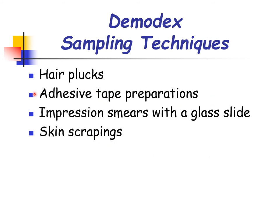Adhesive tape preparations involve pressing tape strips against lesions and transferring the tape to a microscope slide — a useful non-invasive technique in difficult-to-sample areas and where secondary infection has produced exudate. Impression smears with a glass slide are often successful where there are exudative lesions. For skin scrapings, the skin is squeezed first and scraping is performed in the direction of the hair follicles using a scalpel blade. The area to be scraped may need clipping, after which liquid paraffin is applied to the skin surface to enable material to adhere to the blade. Deep scrapings causing capillary ooze are necessary.